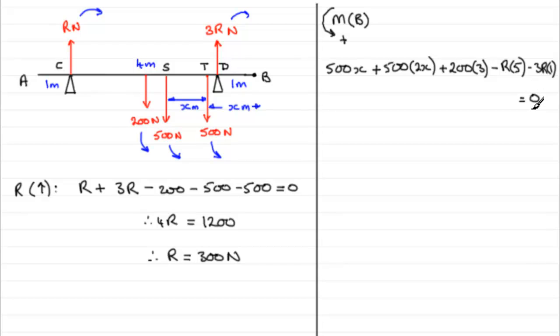And all of this must be equal to 0. There's no total turning effect, it's in equilibrium. If we tidy this up, we've got 500X and 1,000X, so we've got 1,500X. And then we've got plus 600, and here we've got minus 5R, minus 3R, so that's minus 8R. So if I rearrange this by adding 8R to both sides and subtracting 600, we get 1,500X equals 8R minus 600.